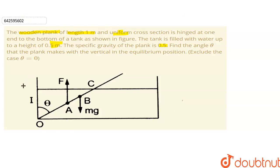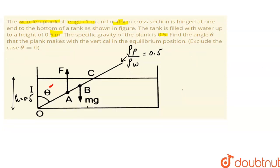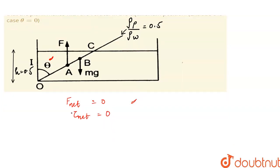So here in this question, this height is 0.5 meter. This wooden plank has a specific gravity of 0.5, meaning the density of the wooden plank divided by the density of water equals 0.5. We have to find this angle theta. Since the plank is in equilibrium, the net force and net torque acting on the plank are both zero. Here we can see the buoyant force acting on the wooden plank and the weight of the plank.